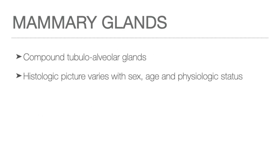Mammary glands located in the anterior chest wall are exocrine glands that produce milk for the sustenance of the young. These are compound tubulo-alveolar glands. Histologic picture varies with sex, age, and physiologic status of the female.